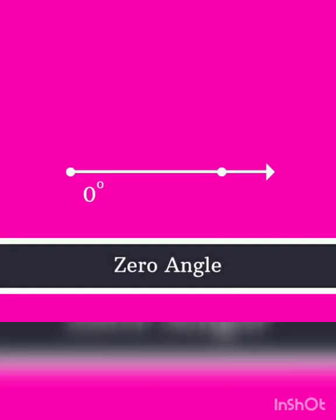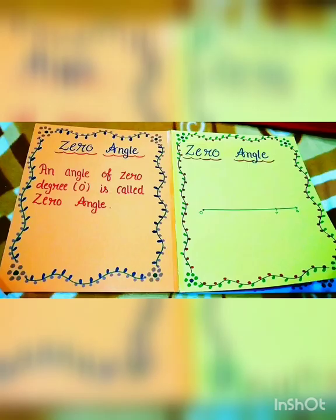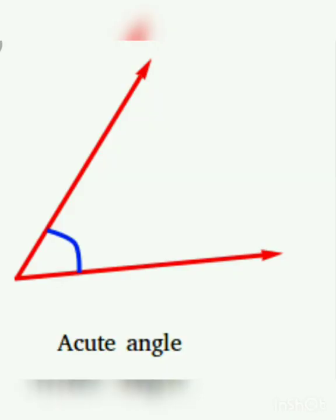Our first type is zero angle. An angle of zero degrees is called a zero angle. When you walk on a road, the road makes a zero angle.